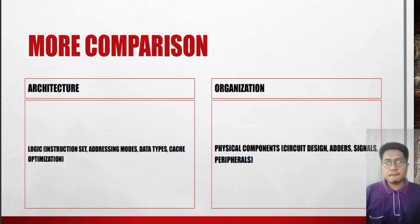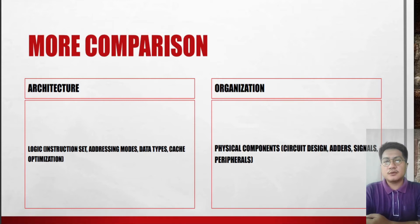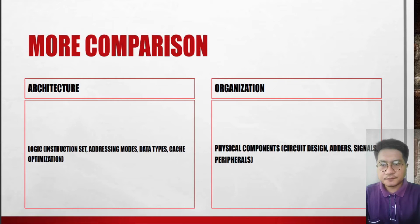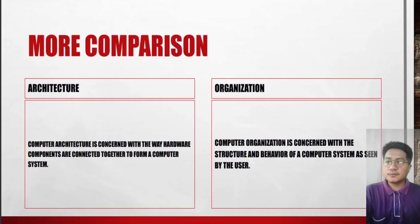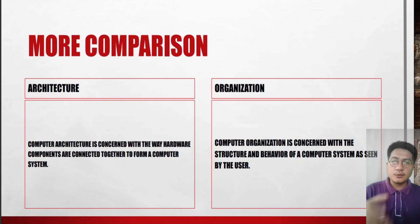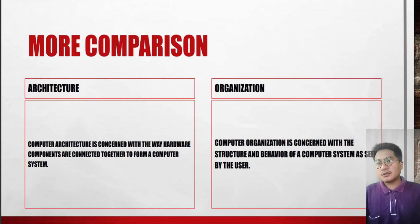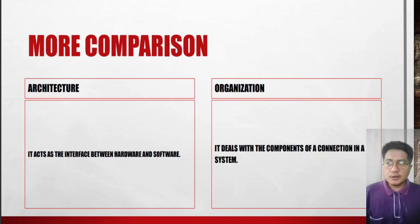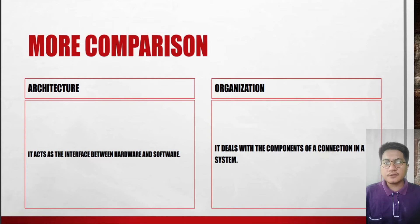Circuits and the connectivity between those peripherals — adders, signals, peripherals — those are under computer organization. In computer architecture, it is concerned with the way hardware components are connected to form a computer system. While computer organization is concerned with the structure and behavior of a computer system as seen by the user. Computer architecture acts as the interface between hardware and software, while computer organization deals with the components of a connection within a system.